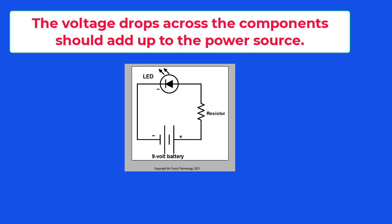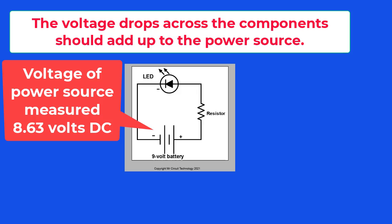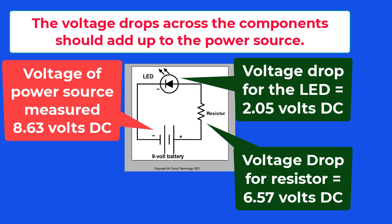In theory, the voltage drops across the components in a circuit should add up to the voltage of the power source. Here, our power source measured 8.63 volts. How much does 2.05 plus 6.57 add up to? 8.62 volts.